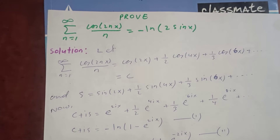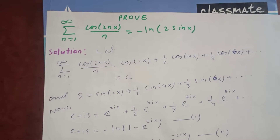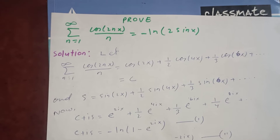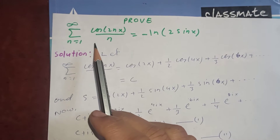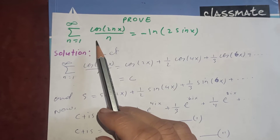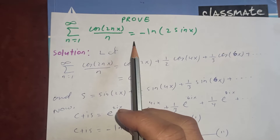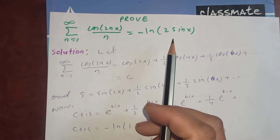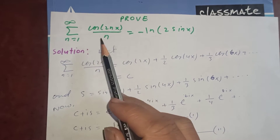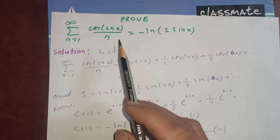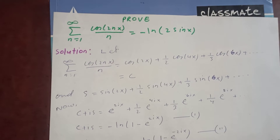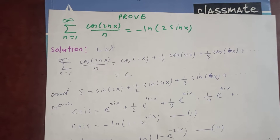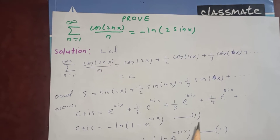Thanks for watching my video today. Let's evaluate this infinite series: the sum from n=1 to infinity of cos(2nx)/n, which is equal to minus log of sine x. This result is helpful when we are dealing with indefinite integrals, so we will prove this first.